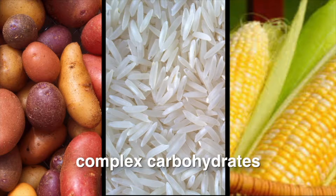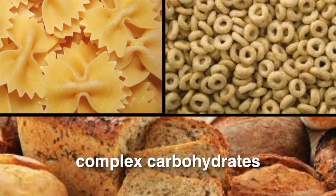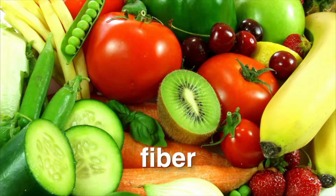There are also complex carbohydrates. Starch is a complex carbohydrate found in plant foods such as potatoes, rice, corn, and products made from grains such as pasta, cereals, and breads. Fiber is also a complex carbohydrate found in plant foods. However, fiber found in fruits and vegetables cannot be broken down and therefore is not a nutrient. Fiber does help keep the digestive system functioning.